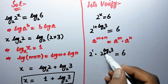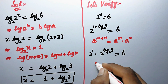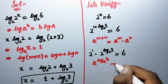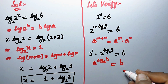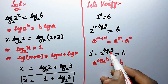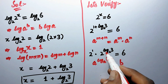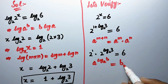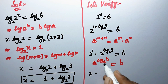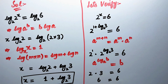Here we apply the logarithm-exponent identity: a to the power log to base a of b is equal to b. Since a equals 2 and b equals 3, the term 2 to the power log to base 2 of 3 equals 3. Therefore we get 2 to the power 1 times 3, which is 2 times 3 equals 6, or 6 equals 6. Left-hand side equals right-hand side, verifying that x equals 1 plus log to base 2 of 3 is the correct answer.